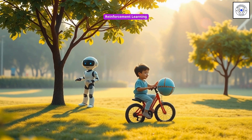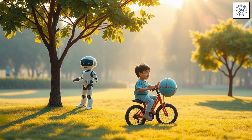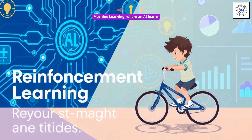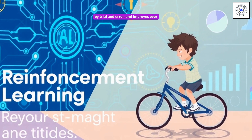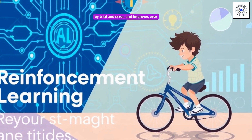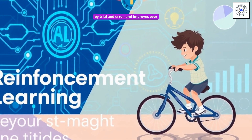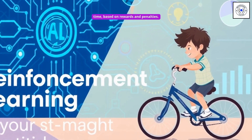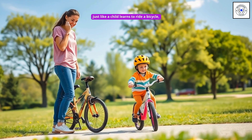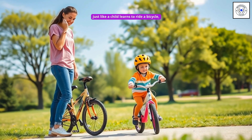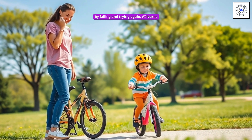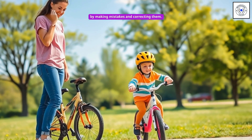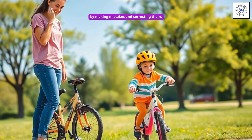Reinforcement learning is a type of machine learning where an AI learns by trial and error and improves over time based on rewards and penalties. Just like a child learns to ride a bicycle by falling and trying again, AI learns by making mistakes and correcting them.